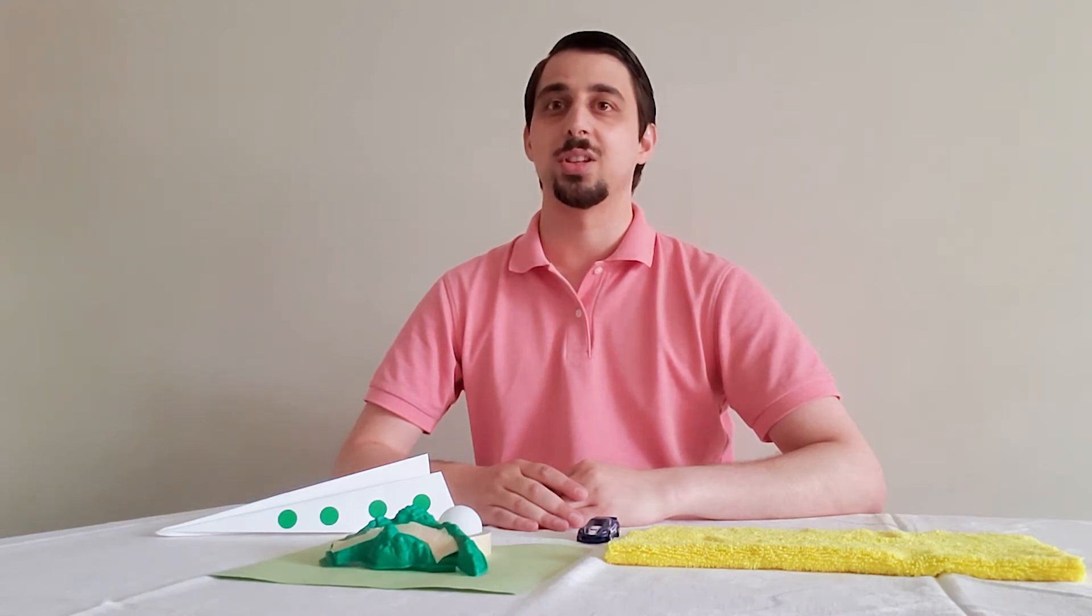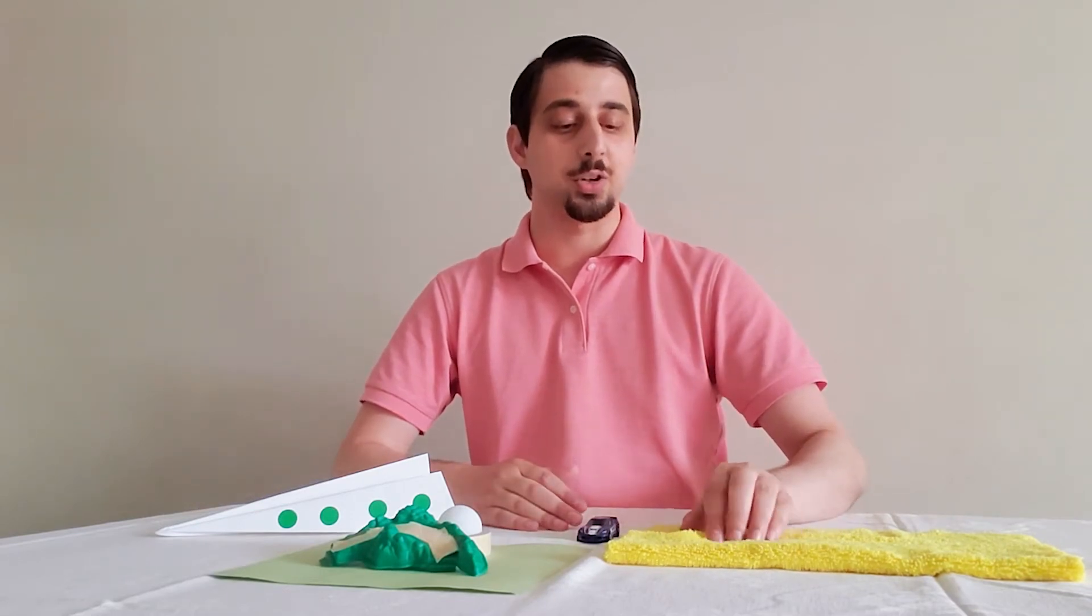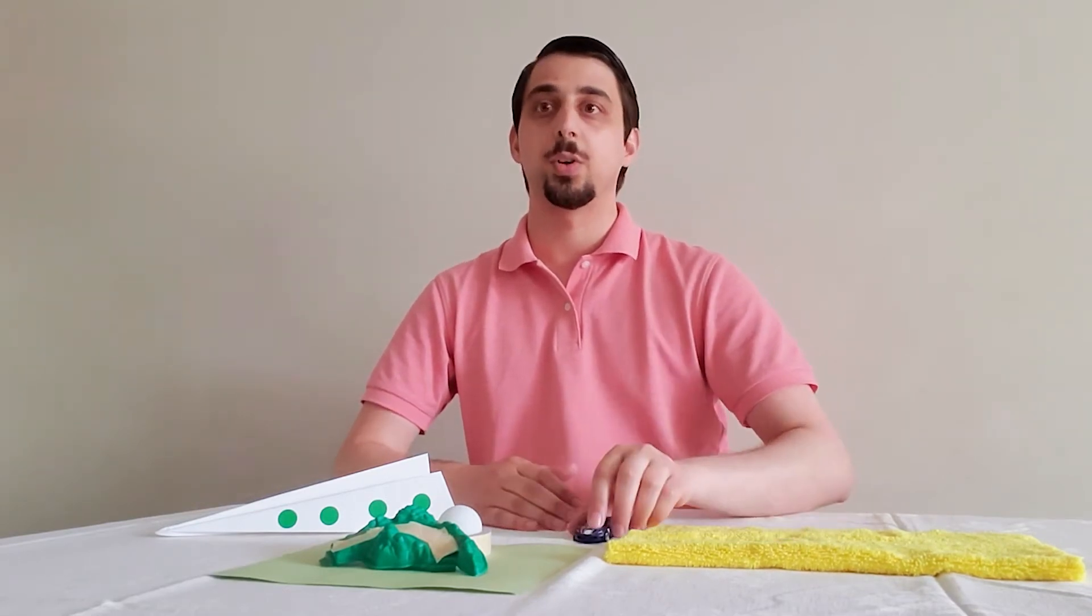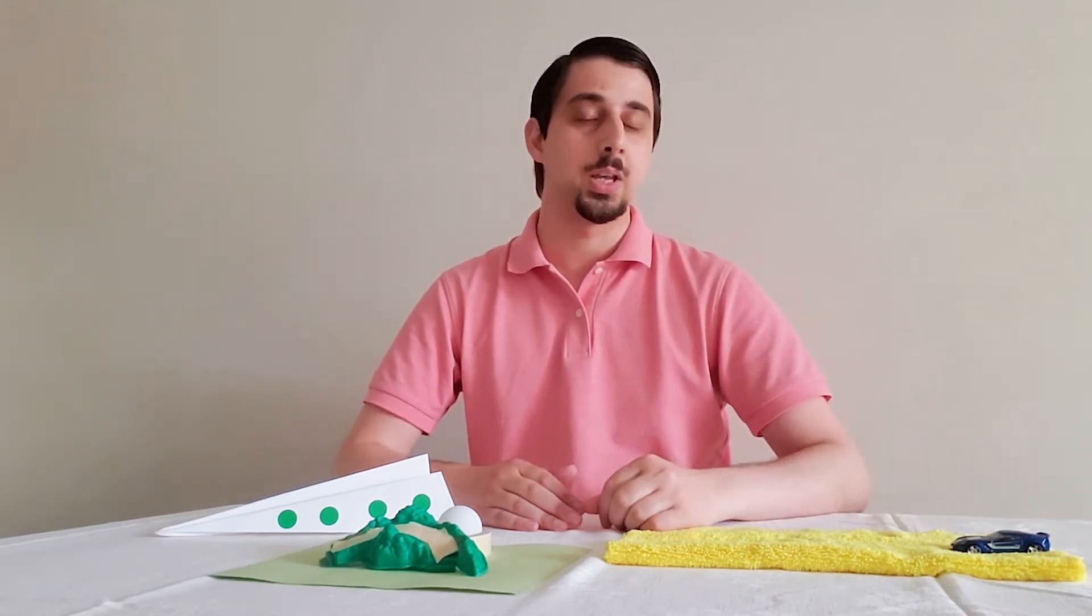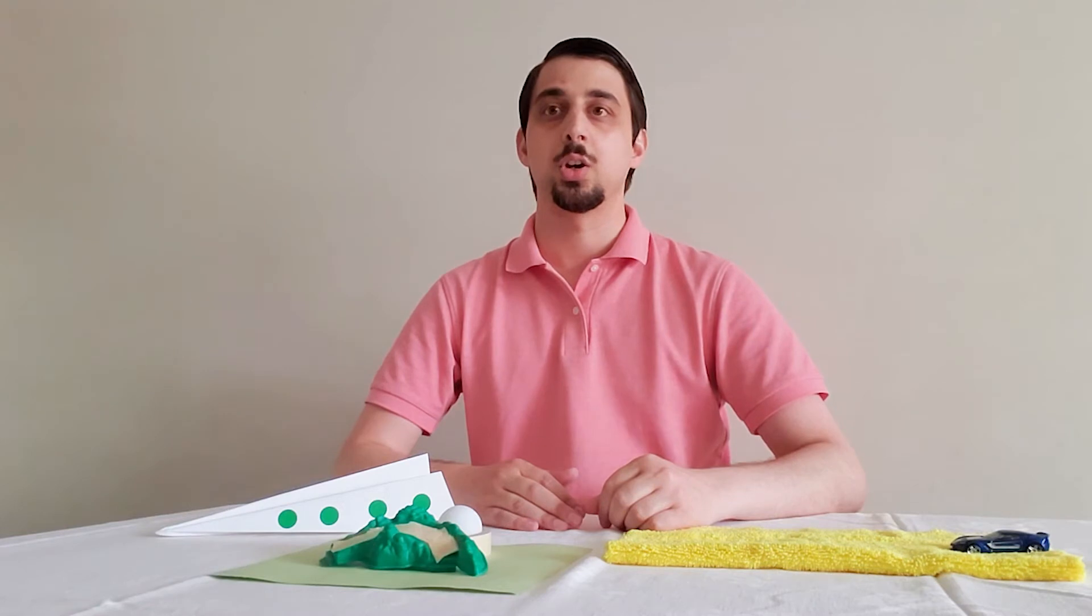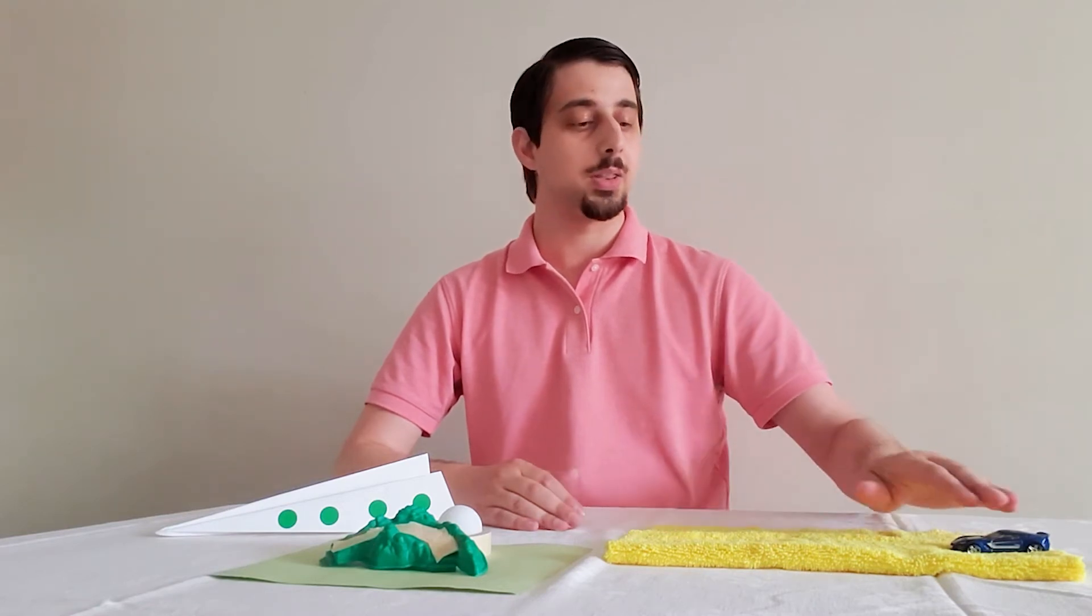The amount of friction changes depending on the type of surface. Rougher surfaces increase friction. For instance, if you push a toy car on a rough surface, like a carpet, it increases friction, causing it to move slower, like this.